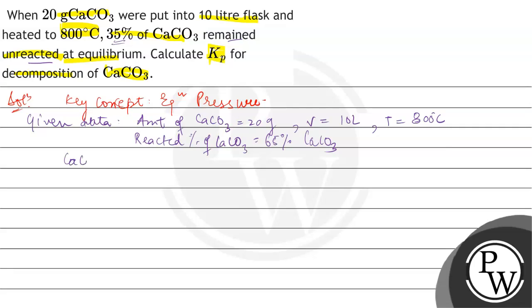Now let's see how CaCO3 reacts. CaCO3 is in solid form. It decomposes into calcium oxide, which is also solid, and CO2 gas.